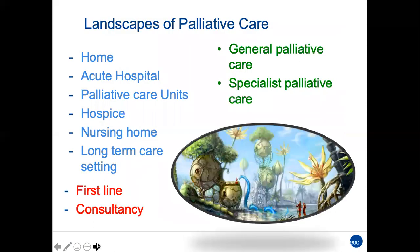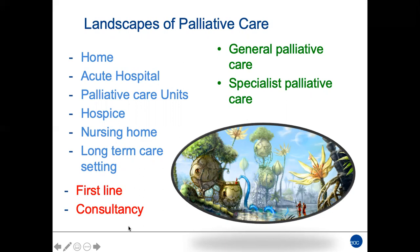Where should we do palliative care? Basically, palliative care should be done where the patient is — at home, in acute hospitals, in dedicated palliative care units, in hospices, nursing homes, and long-term care. We can deliver it as first-line care, where palliative care specialists have direct responsibility for the patient, or in consultancy, where the patient is hospitalized in an oncological department and the palliative care team helps complete the symptom management and psychosocial support.